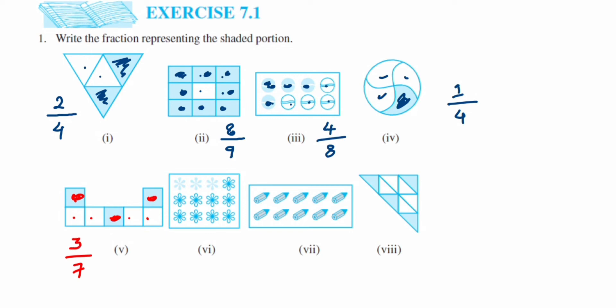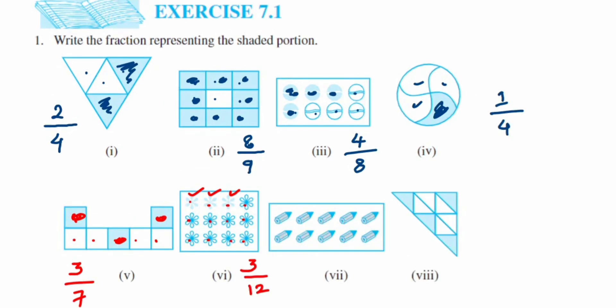The next one has flowers: one, two, three, four, five, six, seven, eight, nine, ten, eleven, twelve — so out of twelve, only three are colored or shaded: one, two, and three. So it's three upon twelve.